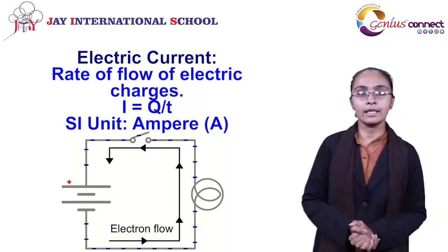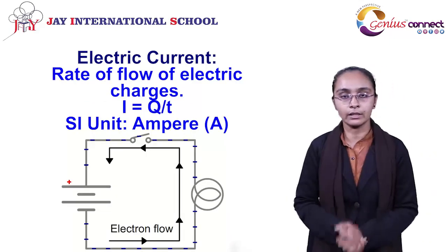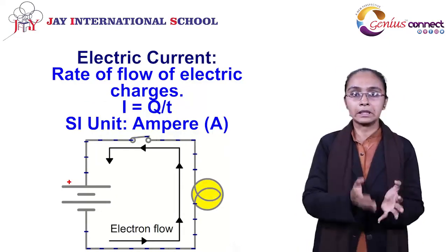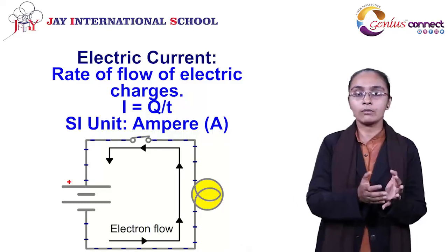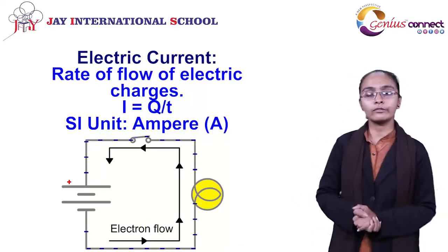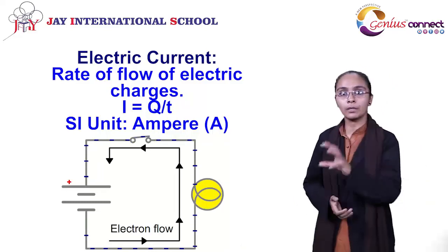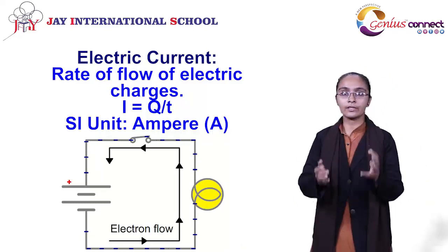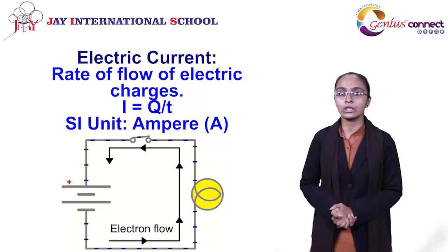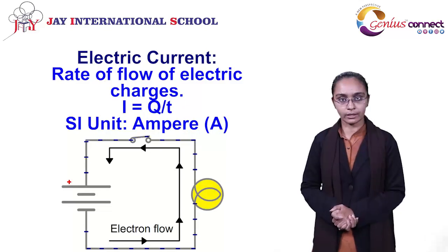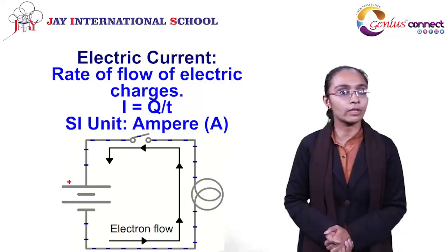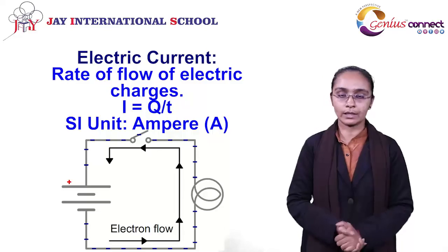When we consider electric current, the current is the flow of charge per unit time — that gives us the terminology of electric current. The SI unit, which is the standardized unit for the same, is the ampere.